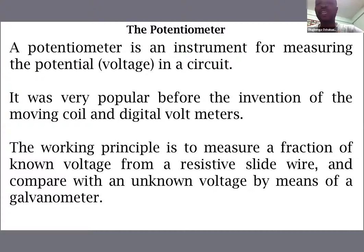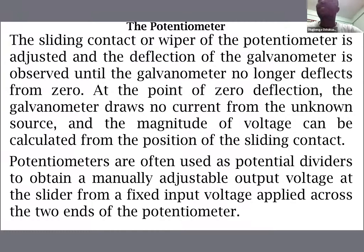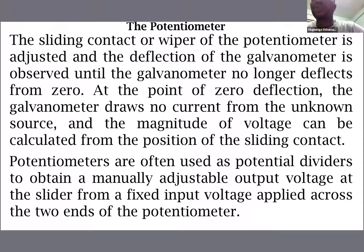A galvanometer is a device that measures tiny current flow; it helps in detecting current flow of a very low magnitude. The sliding contact — what we call the jockey in the laboratory — of the potentiometer is adjusted until the deflection of the galvanometer is zero.